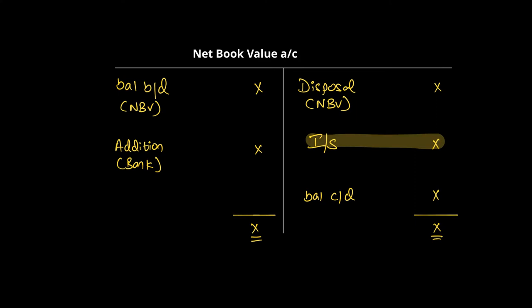Another way to calculate depreciation is through a net book value account, used when assets are available only at net book value. In this account everything is at net book value: opening net book value is on the debit side, closing net book value is what you're solving for, new assets acquired are added on the debit side, and any disposal at net book value goes on the credit side. The figure we calculate — the depreciation expense — is what you adjust in your operating profit. Always calculate the depreciation expense first, then adjust your operating profit.